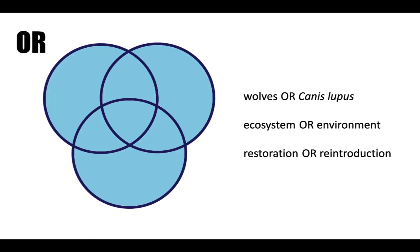The Boolean OR operator is used to combine synonyms and related keywords and is used to broaden your search. It allows you to search for all of those word possibilities simultaneously. OR opens up the possibilities for word variants related to your search concept. For example: wolves OR Canis Lupus, ecosystem OR environment, restoration OR reintroduction.